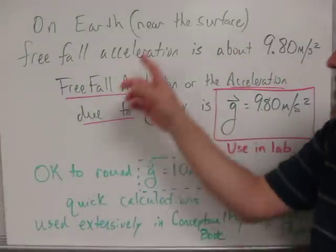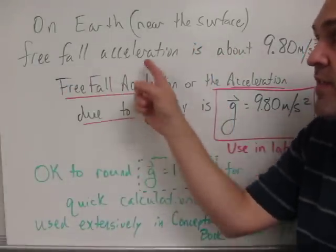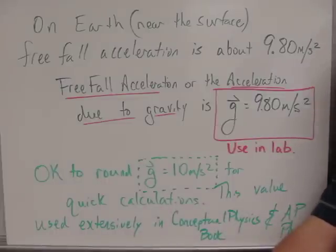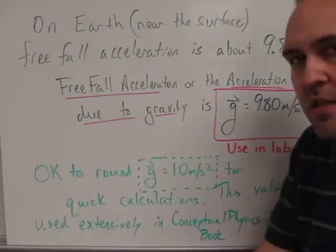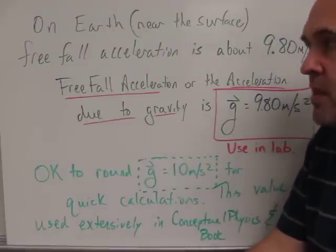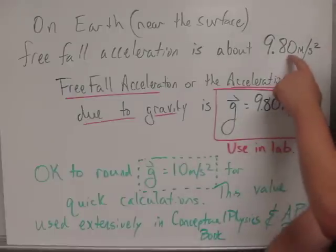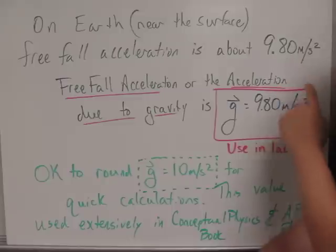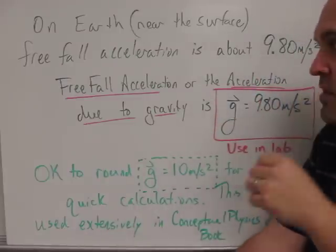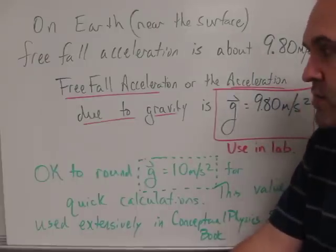On Earth, near the surface, the free fall acceleration due to gravity is about 9.80 meters per second squared. Now it might be slightly more at sea level and slightly less at the top of a mountain, but that difference is usually only in this decimal place. So maybe 9.81 at sea level, maybe 9.78 or something on top of a mountain, but pretty close to 9.80 meters per second squared.